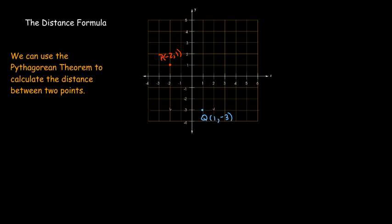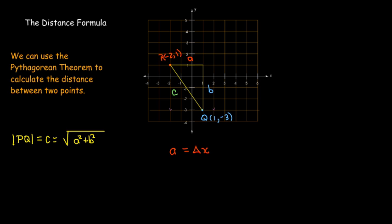Suppose I have two points: point P with coordinates (-2, 1) and point Q with coordinates (1, -3). I'd like to know the distance between them. I can start by drawing a right triangle where the hypotenuse is the line segment from P to Q — that's the c in our Pythagorean theorem.